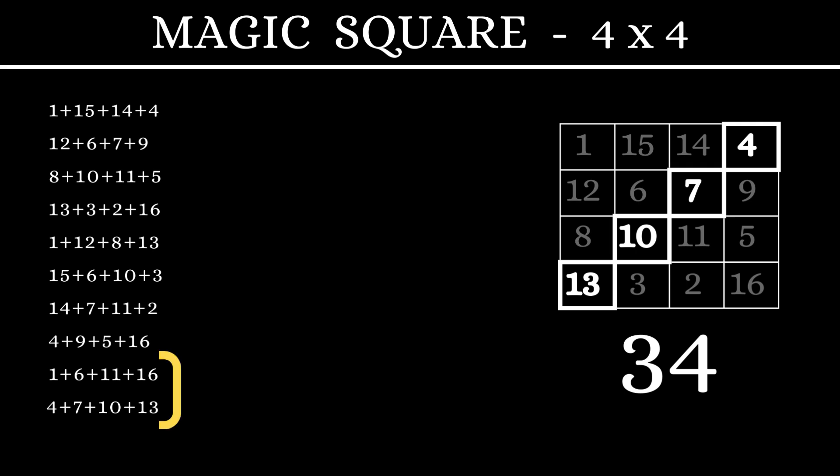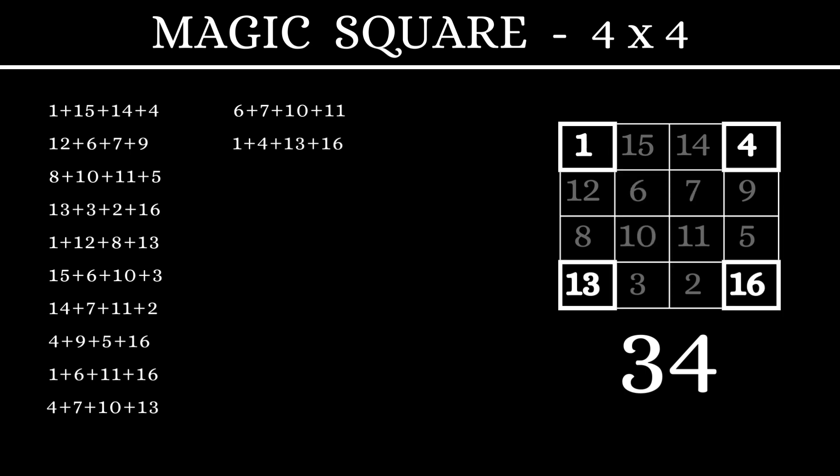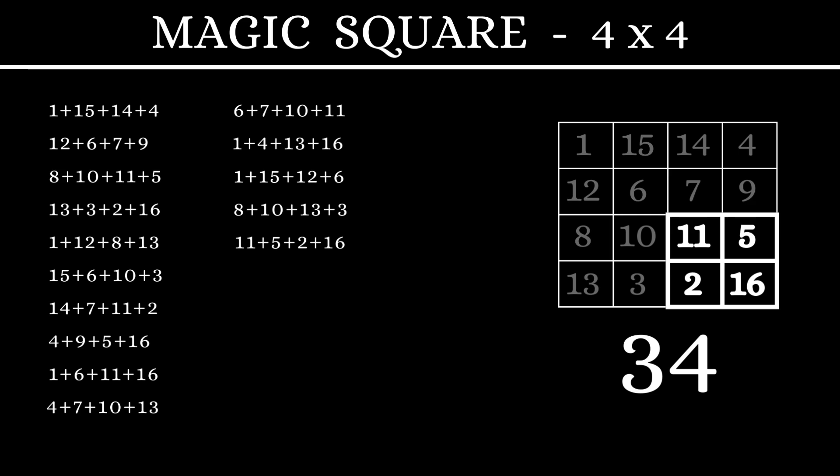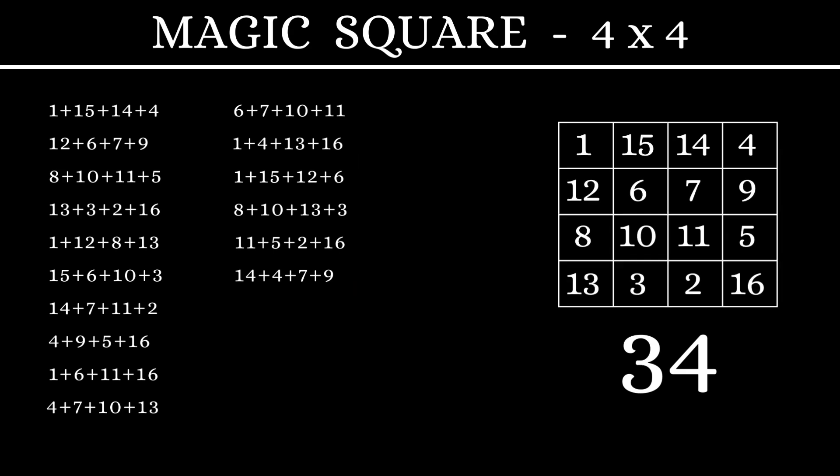The innermost 4 numbers and the outermost 4 numbers, these two sets also add up to 34. Also, if you divide this square into 4 parts, each of the quadrants will also have the numbers adding up to 34. And there's still more magic left.